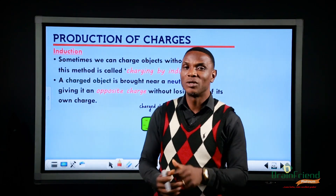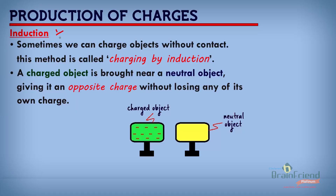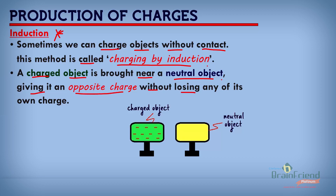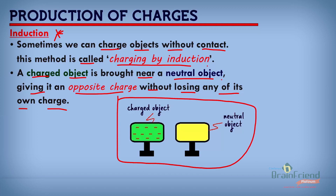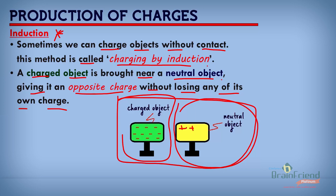The next method of producing charge is by induction. Sometimes we can charge objects without physical contact — this is called charging by induction. A charged object is brought near a neutral object, giving it an opposite charge without losing any of its own charge. At the end of the process, we'll find negative charges on the other end of our once neutral object, while the charges on our originally charged object remain exactly the same.